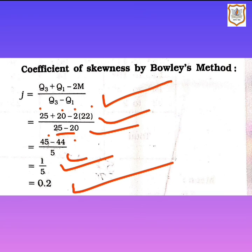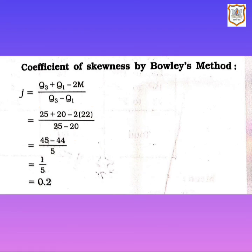Since the coefficient of skewness J = 0.2, which is positive, the given frequency distribution is positively skewed. We are done with sum number one — go through it, revise it properly. Thank you.